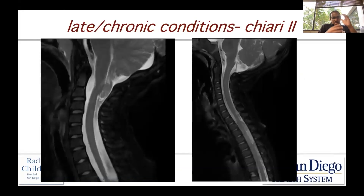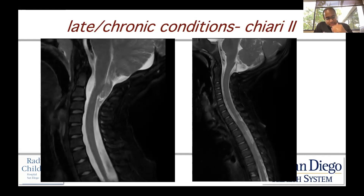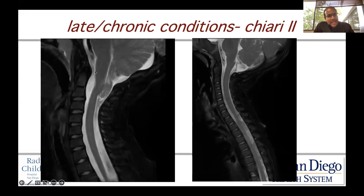On the left, this is an example of a sagittal T2 MRI scan in a child with myelomeningocele who underwent postnatal closure. You can see the significant herniation of the cerebellar tonsils into the subaxial cervical spinal canal, and associated with this is herniation of the brainstem contents. That's unique to Chiari 2 patients in general.